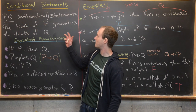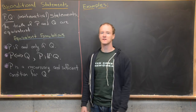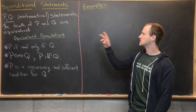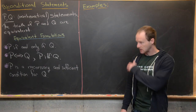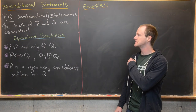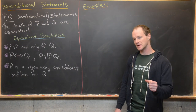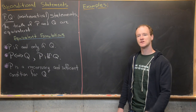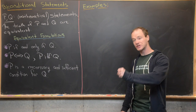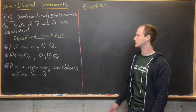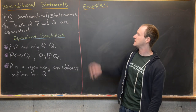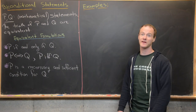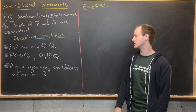Let's look at biconditional statements. Suppose P and Q are both mathematical statements. A biconditional statement means P implies Q and Q implies P — both the implication and the converse are true. In other words, the truth of P and Q are equivalent.